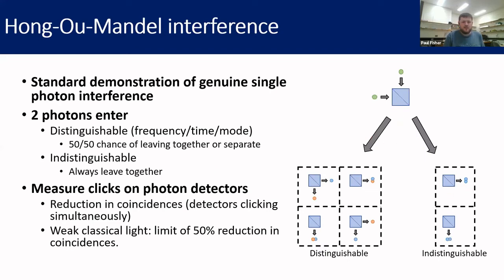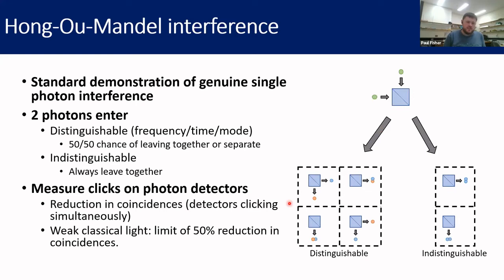They'll either all go left or all go right. We can detect this by placing detectors at the outputs of the beam splitter and watching for coincidences — that's when both detectors go off at the same time.